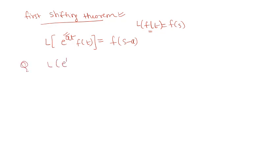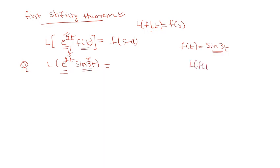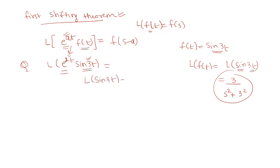For example, find the Laplace transform of e^(2t) sin(3t). Comparing with e^(at), here a equals 2. The function is sin(3t). Using the formula for Laplace of sin(at) — which is a/(s²+a²) — the Laplace of sin(3t) is 3/(s²+9).